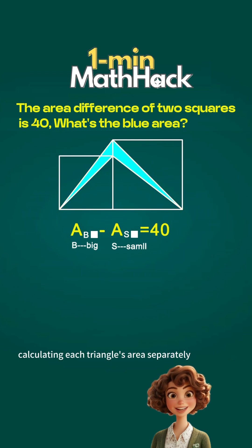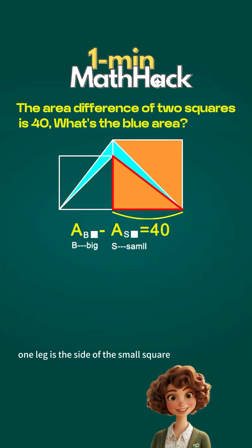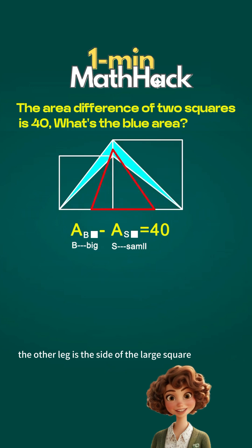Calculating each triangle's area separately is pointless. Look at this right triangle. One leg is the side of the small square. The other leg is the side of the large square.